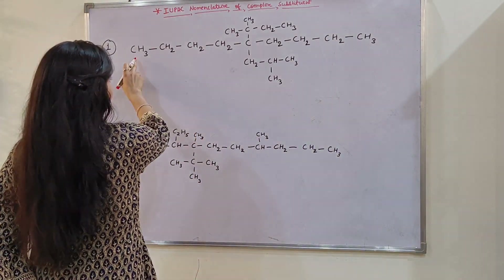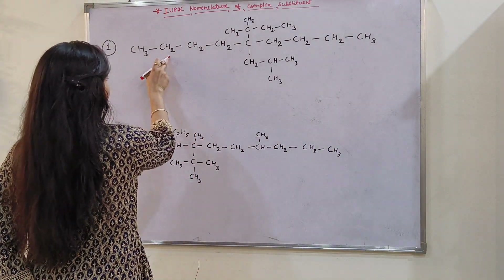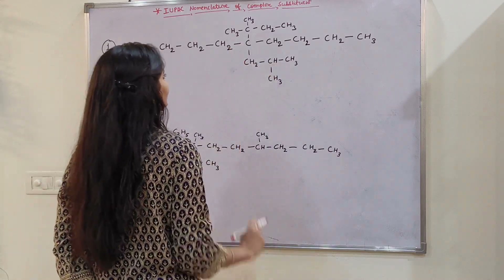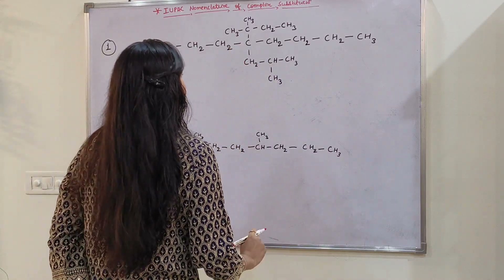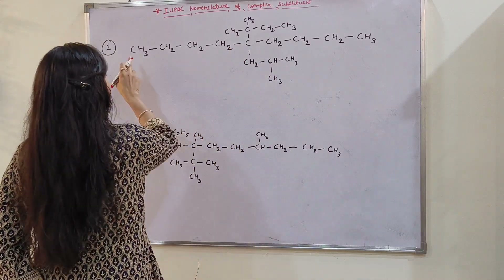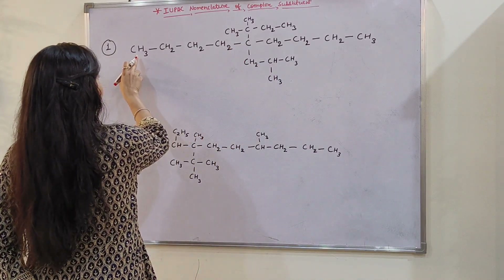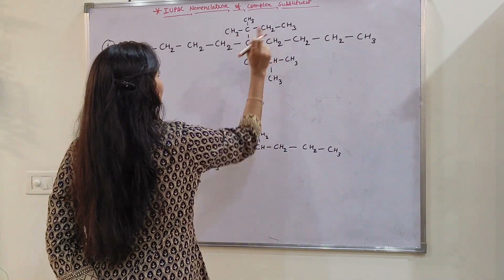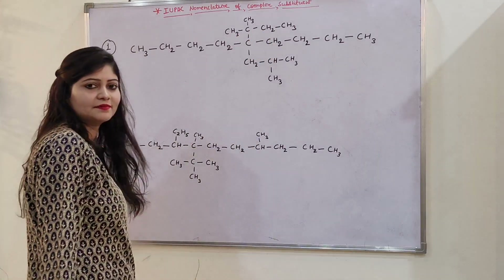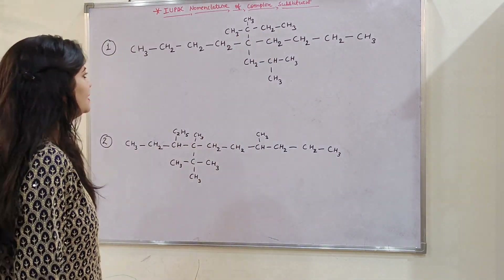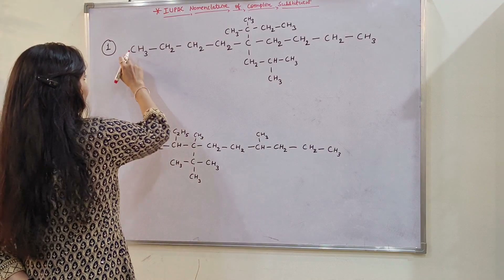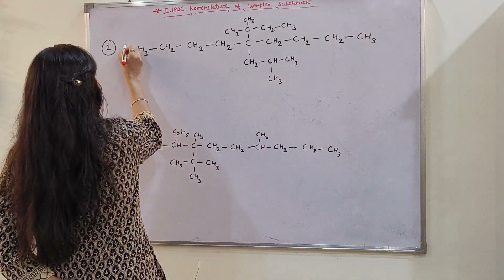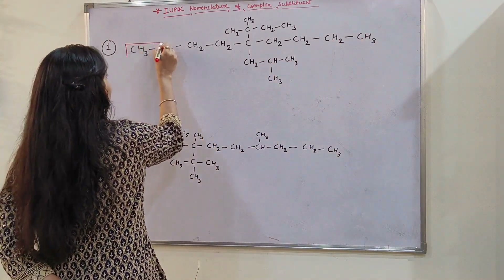If we start counting here: 1, 2, 3, 4, 5, 6, 7, 8. Then we are getting 8 carbons. If we start counting here: 1, 2, 3, 4, 5, 6, 7, 8. Then we are getting 8 carbons. We can see the longest chain of carbon is 9 carbons. First of all, let's select it.